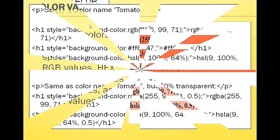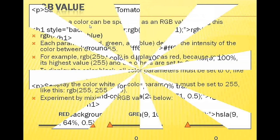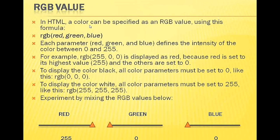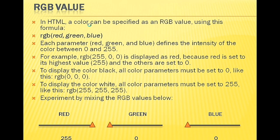So RGB values - in HTML, RGB values are used to specify a color. RGB stands for Red, Green, Blue. The RGB value uses a formula where each color parameter (red, green, blue) is defined between 0 and 255. For example, rgb(255, 0, 0) displays as red color, because red has the highest value 255.